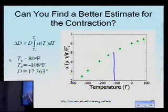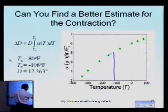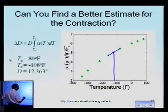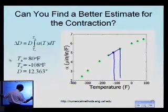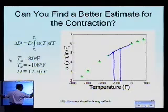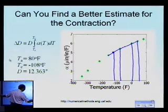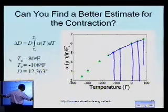I'll be able to find out what the value of alpha at minus 108 degrees Fahrenheit is, then I will take this trapezoid, then I will take this trapezoid here, then I will take this trapezoid here, and then I will take this trapezoid here, because that's at 80 degrees Fahrenheit.